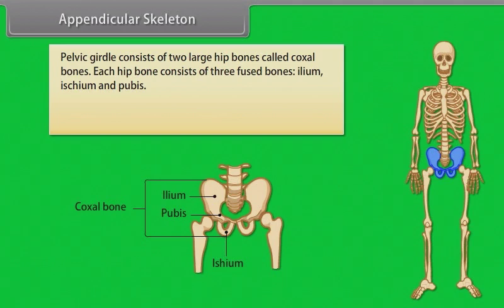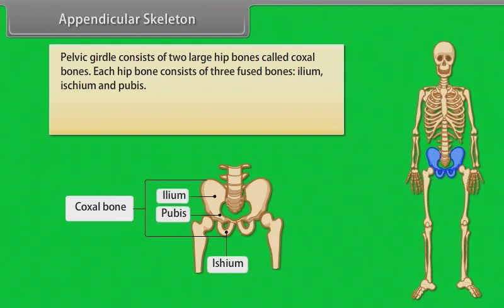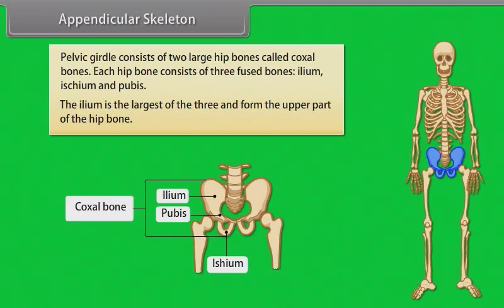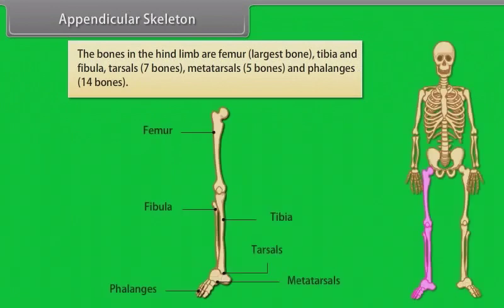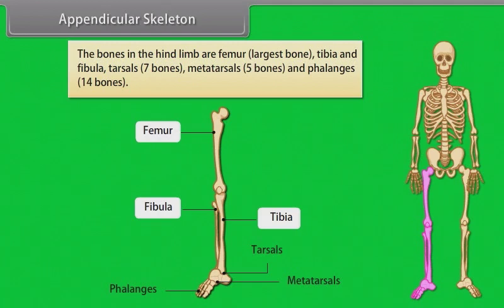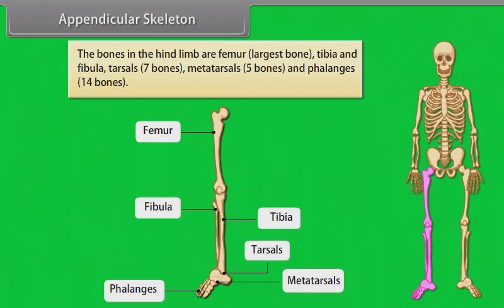The pelvic girdle consists of two large hip bones called coxal bones. Each hip bone consists of three fused bones: ilium, ischium, and pubis. The ilium is the largest of the three and forms the upper part of the hip bone. The bones in the hindlimb are: femur (the largest bone), tibia and fibula, tarsals (seven bones), metatarsals (five bones), and phalanges (fourteen bones).